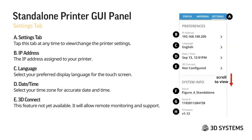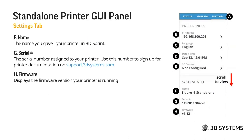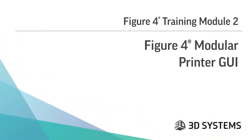For the settings tab, you'll find the IP address of your printer. You can change the language for your GUI — click the language section and select the language you want. The date and time section also lets you select your time zone. 3D Connect is a feature not yet available but will allow remote monitoring and support in the future. If you scroll down, you'll find system info: the name you gave your printer in 3D Sprint, the serial number assigned to your printer, and the firmware version currently being used.